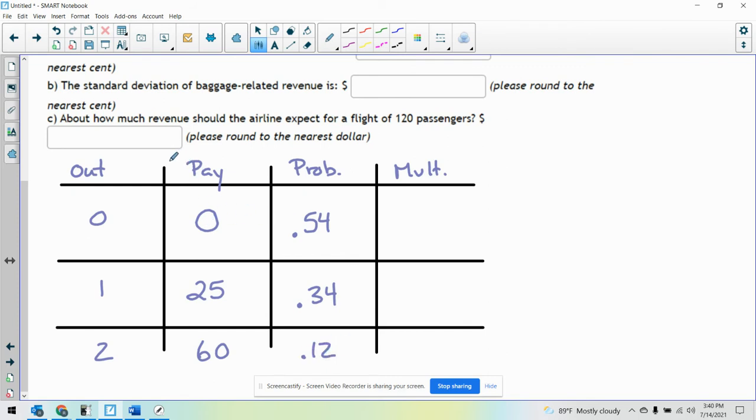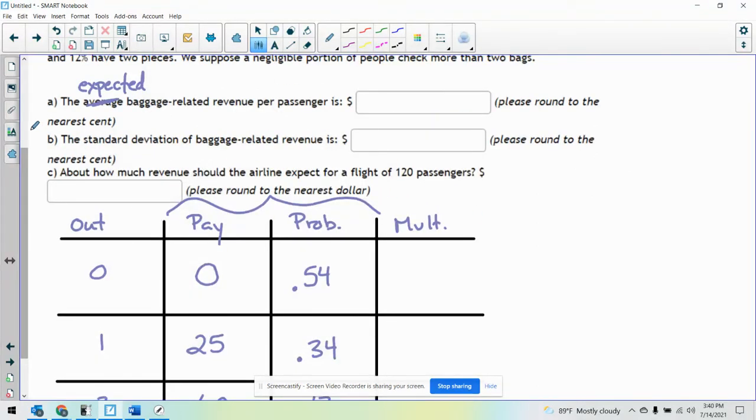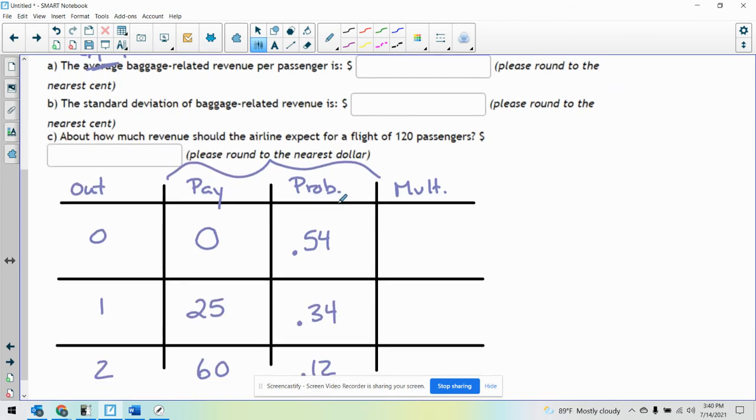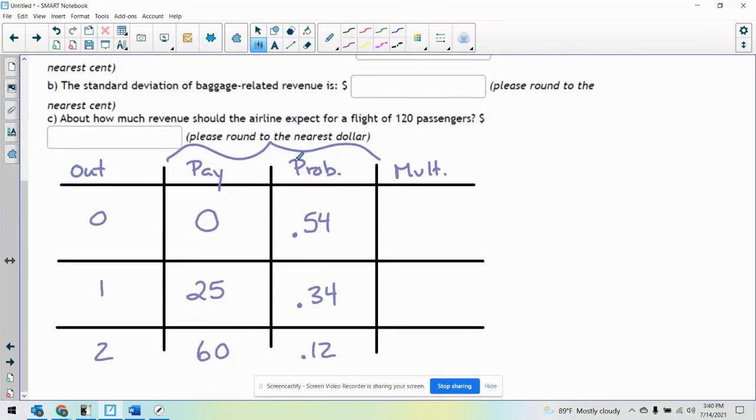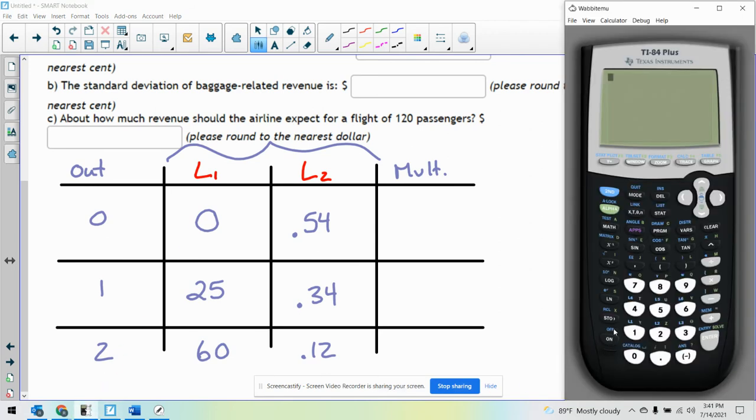Now you could multiply these two columns and then add up the multiply column. But we also need the standard deviation, which you can't really do this way. The standard deviation is a messy thing. So unless it gives you some very direct distribution, you're going to want to stick to the calculator. So what I'm going to do is take these two columns and put them into my calculator. Let's call this one L1 and this one L2. If I go to my calculator, I'm going to go to my stat menu, edit, clear that out. I'm going to put all the payout values into L1: 0, 25, and 60, and their probabilities into L2: 0.54, 0.34, 0.12.